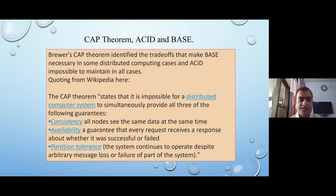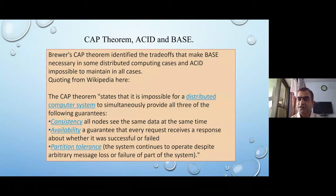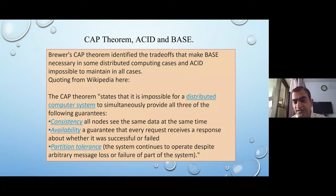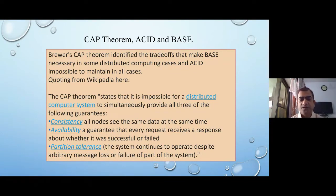The third important property is partition tolerance — the system continues to operate despite arbitrary message loss or failure of part of the system. So if out of ten servers some go down because of partition breakdown or a link between two data centers breaks, my system should still work. Based on these three concepts, the CAP theorem works. CAP says that only two of the three are possible at any time: if you want C and A, you cannot have partition tolerance; if you want P and A, C is not possible; and if you want C and P, A is not possible.